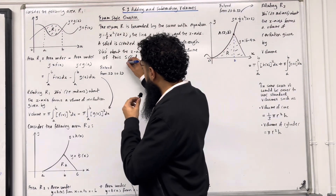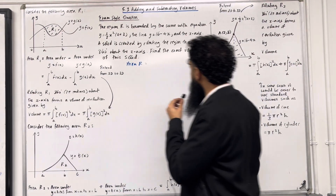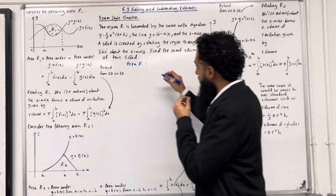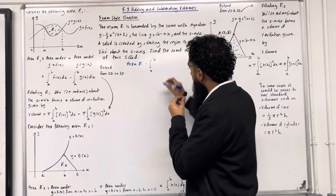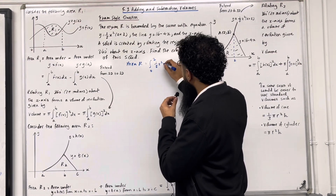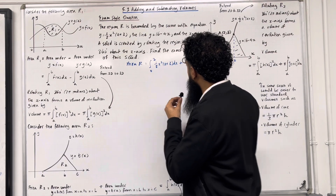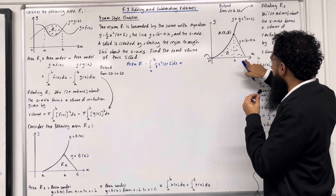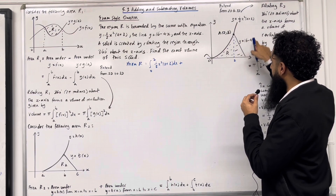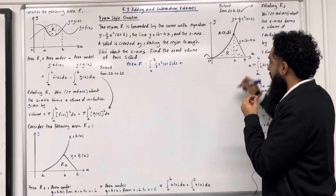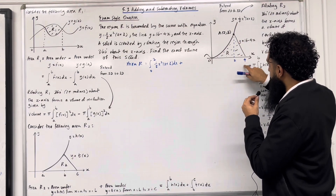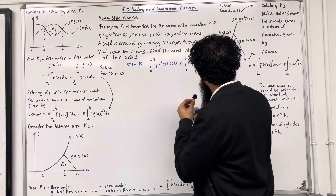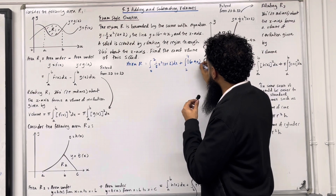To find the area R, I need the area under the curve from 0 to 2: the integral from 0 to 2 of ½x²(x + 2) dx. Plus the area under the straight line. Setting y = 0 in the straight line and solving gives x = 4, so I want the area under the straight line from 2 to 4: plus the integral from 2 to 4 of (16 − 4x) dx.